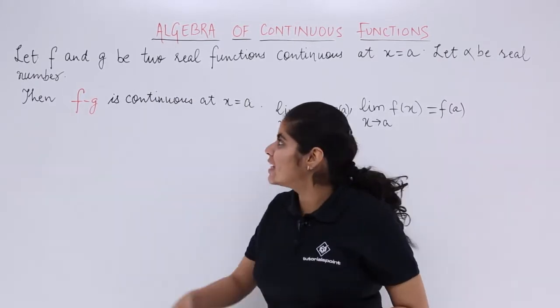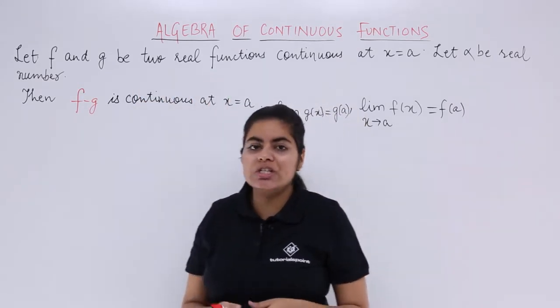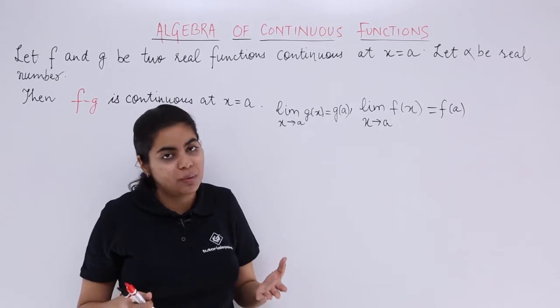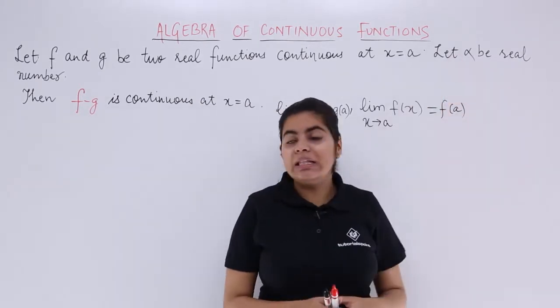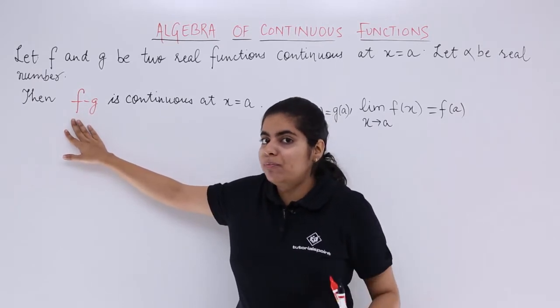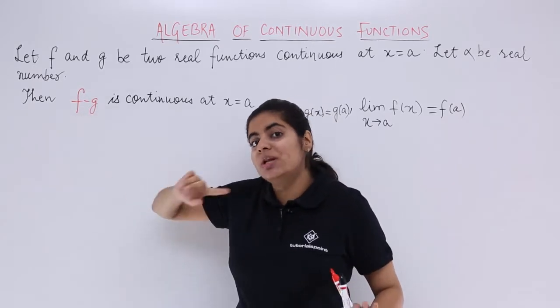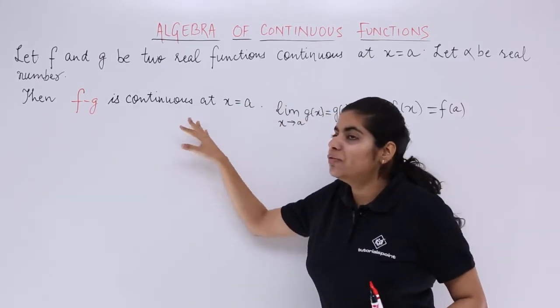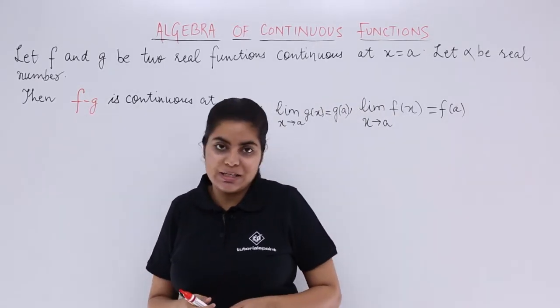Again, the introduction is the same. f and g are two real functions and they are continuous at x equals a. You know all this story from the previous video. So let a be the real number and now I am going to say that it is not f plus g that I am taking into consideration but f minus g. That means the difference, and the difference is also continuous at x equals a.